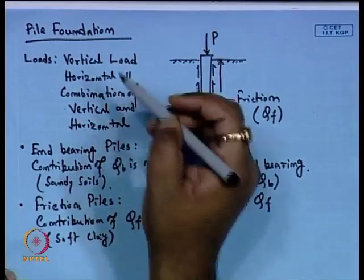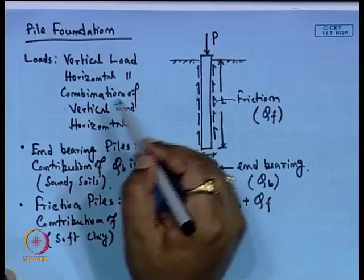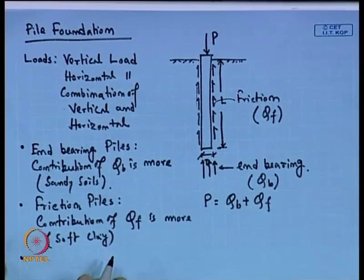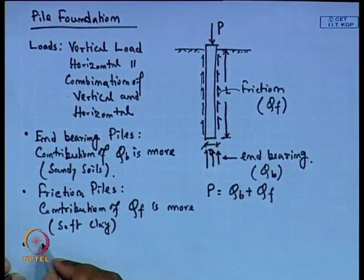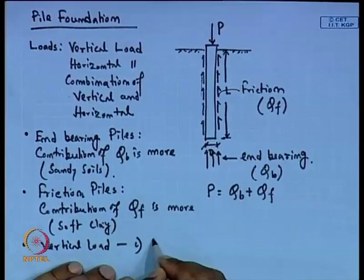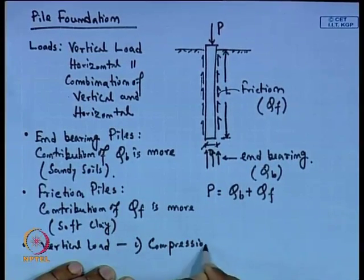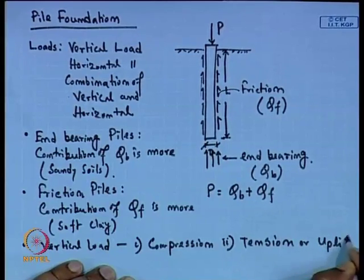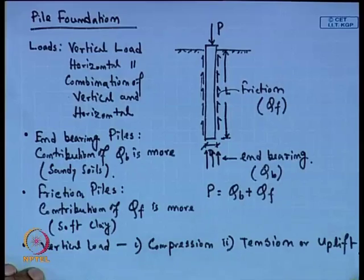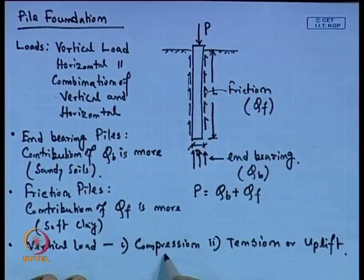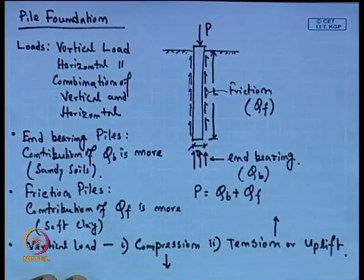Depending upon different types of loading — vertical loading, horizontal loading, and combination — we can classify piles into different types. One is compression pile, where vertical load can be two types: one is compression, another is tension or uplift. Compression is very common for any structure; piles are generally used against compression load. In tension load, the vertical load is in the upward direction, whereas compression is downward — both are vertical loads.